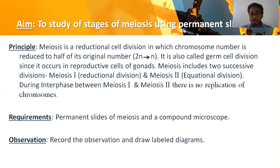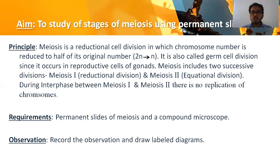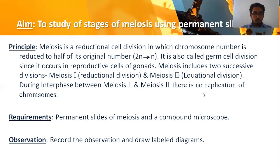Requirements: we need permanent slides of meiosis and a compound microscope with good, higher magnification. For observation, we need to observe the different slides under the microscope, identify the stages, and draw labeled diagrams.